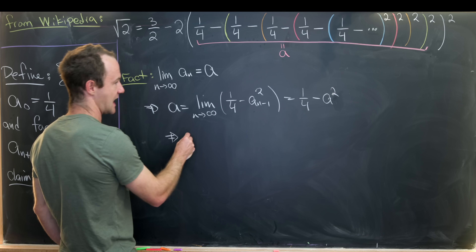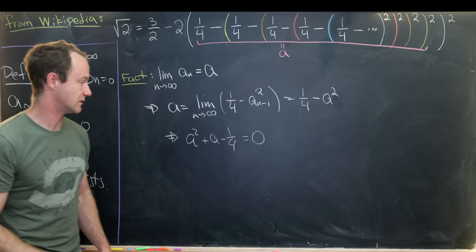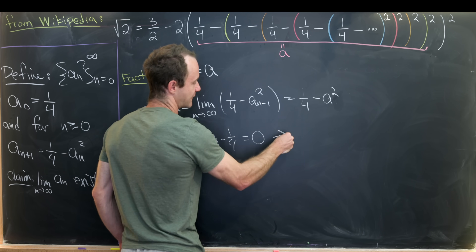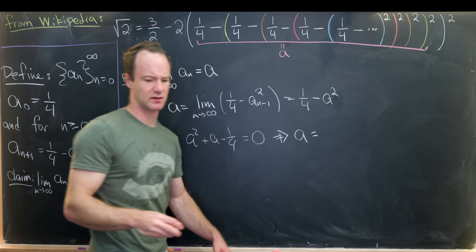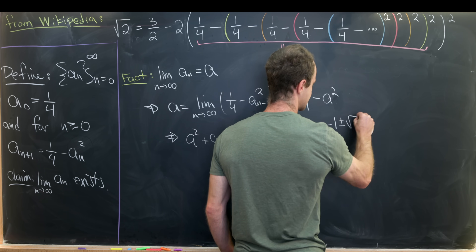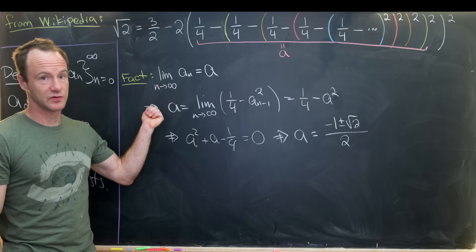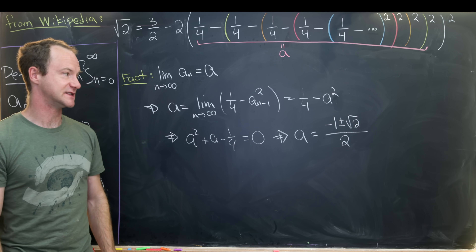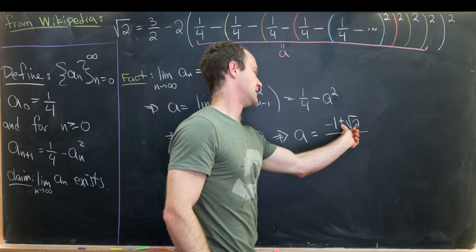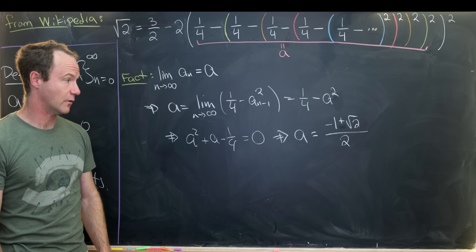That means A² plus A minus 1 quarter equals 0, so A satisfies this quadratic equation. Applying the quadratic formula — I'll let you check the computational details — gives A equals (−1 ± √2) / 2. Since all terms Aₙ are between 0 and 1 quarter, we pick the value between 0 and 1 quarter, which is the one with the plus sign: A = (−1 + √2) / 2. The minus sign version is clearly less than 0.